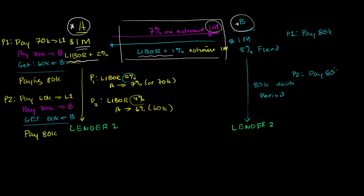Then it's going to get 7% every period from Company A, so it will get $70,000. But now it's going to be paying LIBOR plus 1%. So in Period 1, it's going to pay $60,000, and then in Period 2, it's going to pay $50,000.